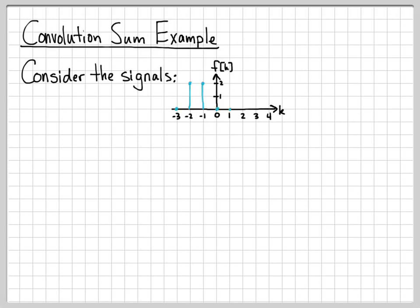Let's let f of k be this signal. On the time axis, I'm going to plot it. It's basically zero almost everywhere. It's zero everywhere except for at time k equals minus 1, it's equal to 2, and at k equals minus 2, it's equal to 2.